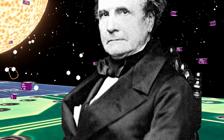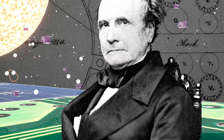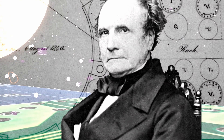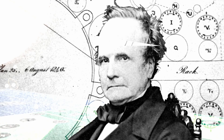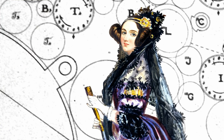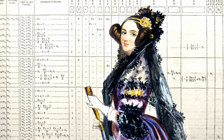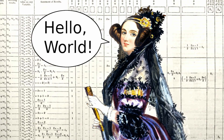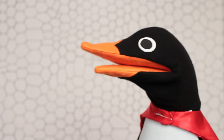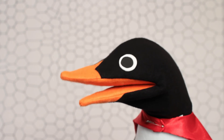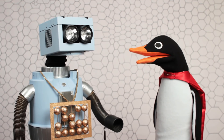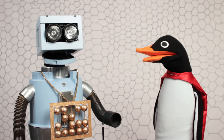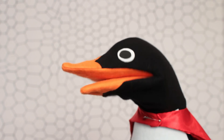In 1834, Charles Babbage developed plans for a computational machine called the analytical engine. And his assistant, Ada Lovelace, designed the first algorithm for it. That's right — Ada was the first computer programmer, but the analytical engine was never built.